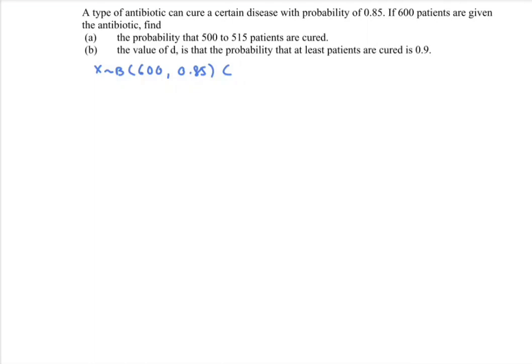So in here, very obvious, we have to convert the situation to the normal distribution because n is more than 50. So we have 600 multiplied with 0.85, where we have 510 for the mu. In order to find the variance, we have to multiply npq, where we have 510 multiplied with 0.15 and we will have 76.5. So the variance is the square root of 76.5 squared.